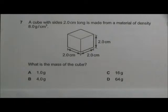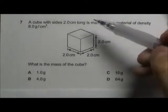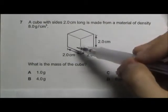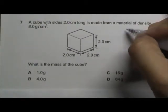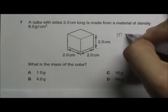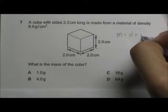In this question, we are asked to find what is the mass given the density as well as the dimension of the cube. We can use the formula mass equals density multiplied by the volume.